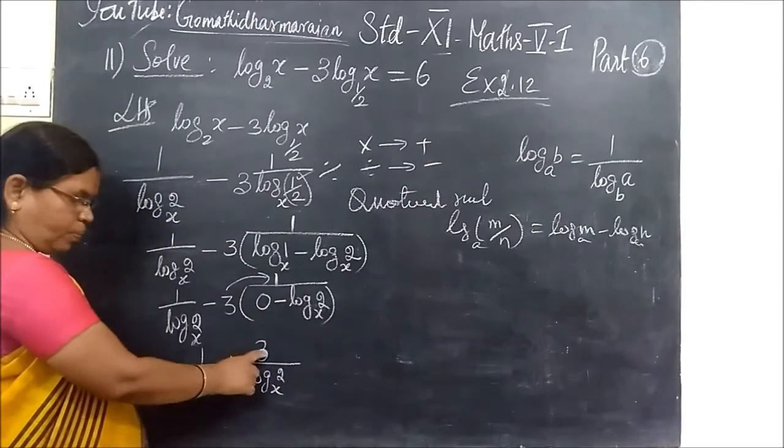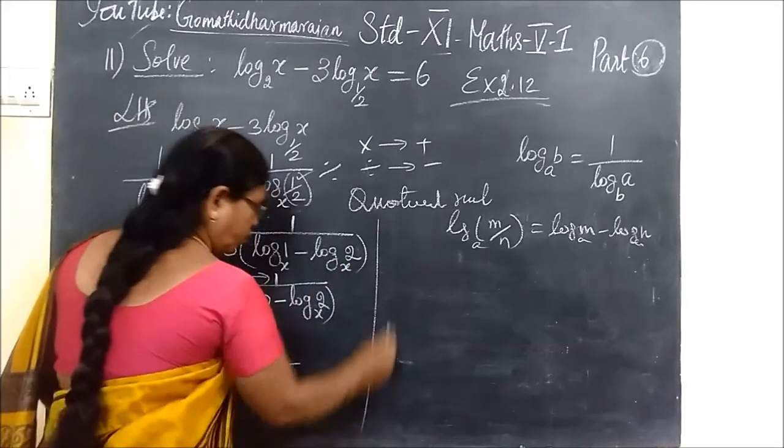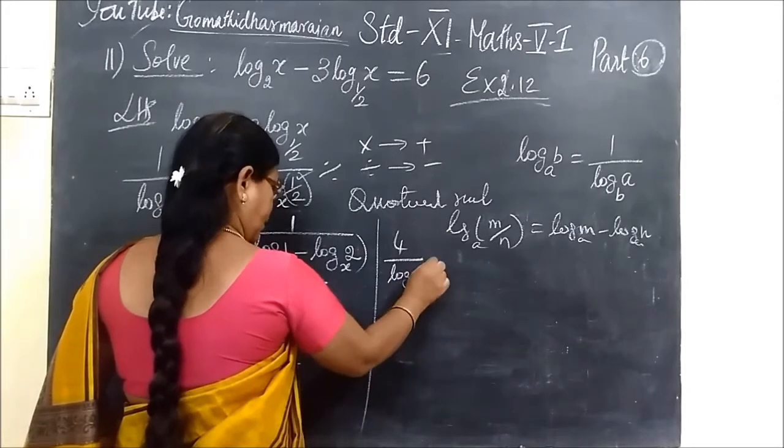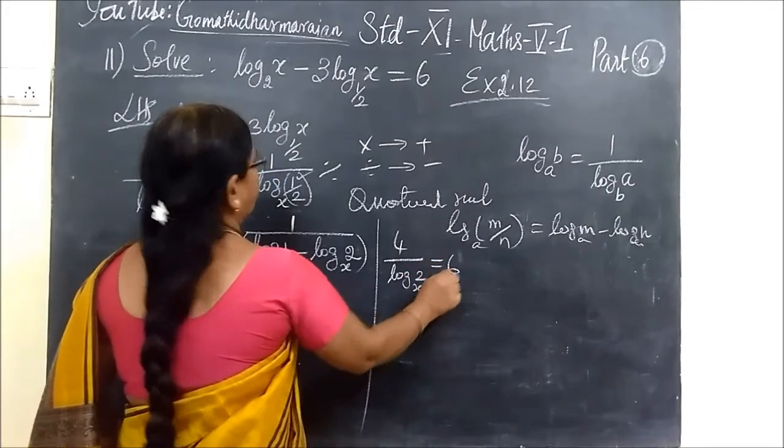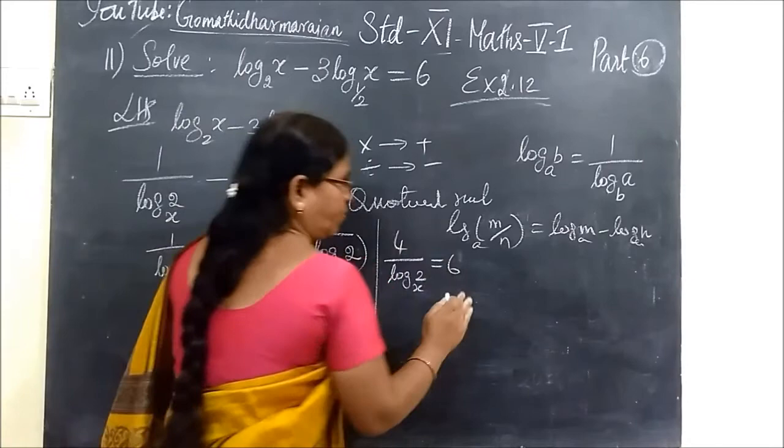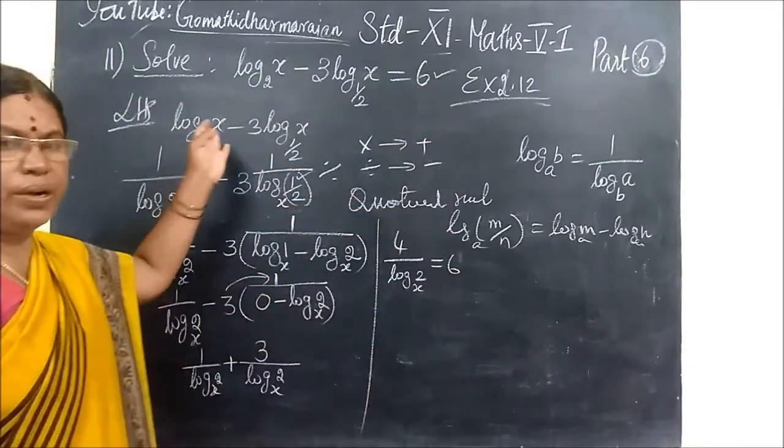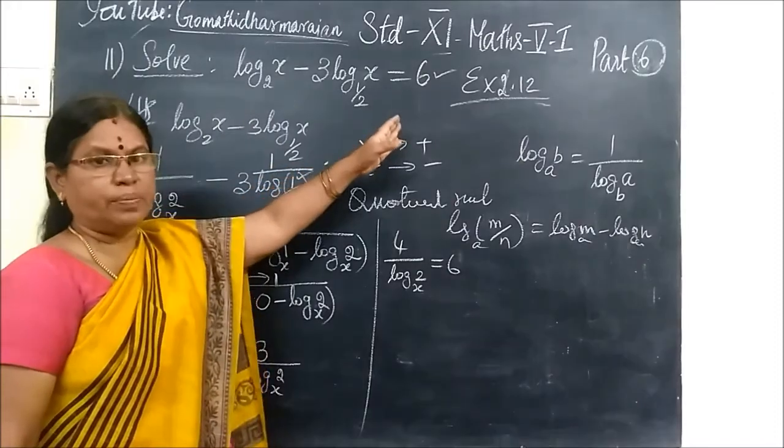So 1 plus 3, 4, so 4 by. Now log 2 to the base x. You know, the equal to. You know, sometimes in the RHS, sometimes we are not going to take RHS, prove that everything, whatever.